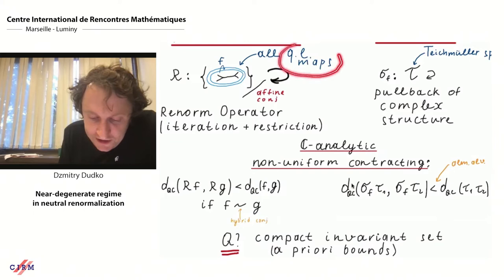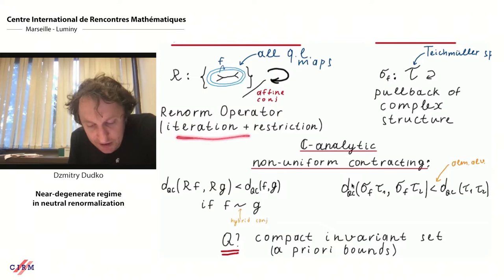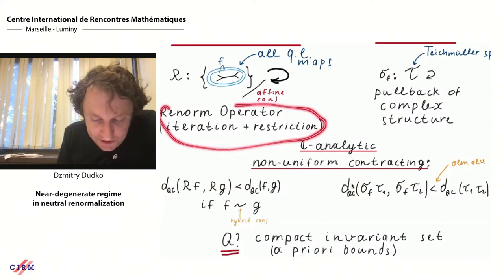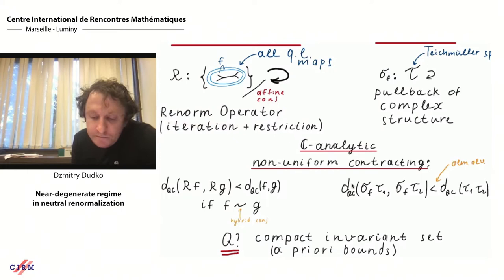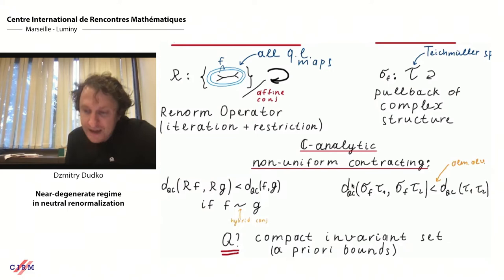We consider the space of all quadratic-like maps up to hybrid conjugacy. This is a nice analytic space. The renormalization operator involves iteration and restriction — both are analytic operations. So the renormalization operator is itself analytic and contracting. If we have two maps that are hybrid conjugate, then their renormalizations will also be hybrid conjugate and the quasi-conformal distance will be smaller.